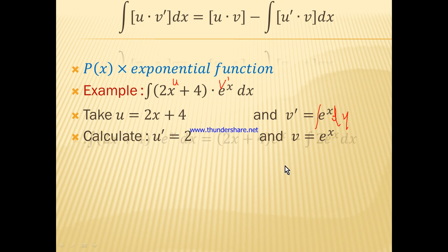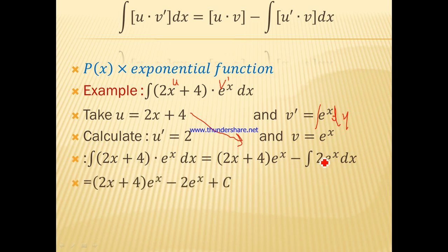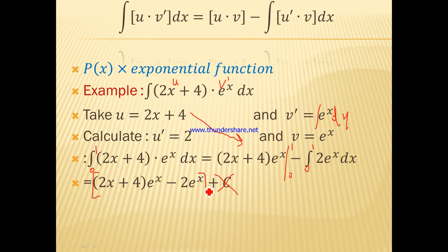The integral of u·v' equals u·v minus the integral of u'·v dx, giving (2x+4)·e^x minus the integral of 2·e^x dx. This equals (2x+4)·e^x minus 2·e^x plus C. For a definite integral from 0 to 1, we drop the C and evaluate [u·v] from 0 to 1 minus the integral from 0 to 1 of u'·v dx, taking everything between 0 and 1.